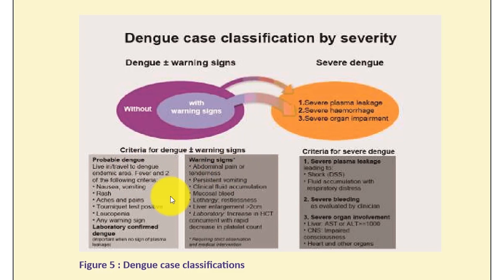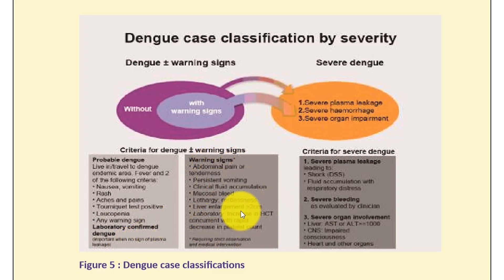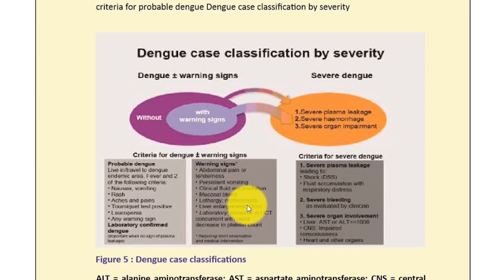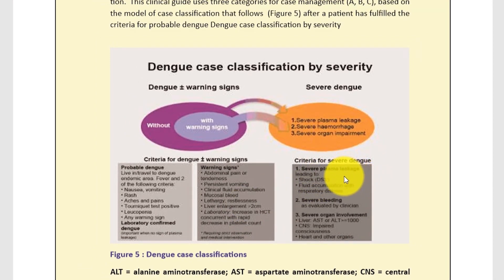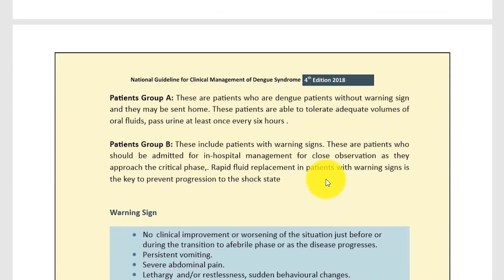The criteria for Dengue without warning signs — probable Dengue — include: travel to endemic areas, fever, and two of the following: nausea, vomiting, rash, aches and pains, tourniquet test positive, leukopenia, and no warning signs confirmed. The warning signs are also listed, and the criteria for severe Dengue include: severe plasma leakage, severe hemorrhage, and severe organ involvement.